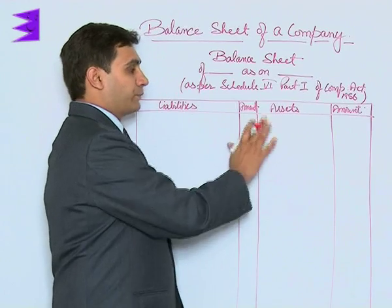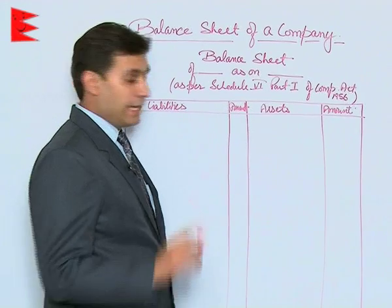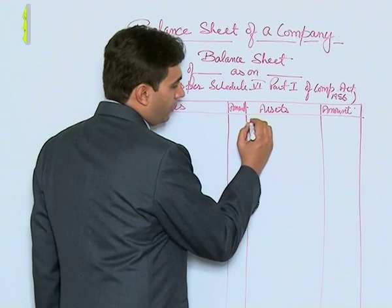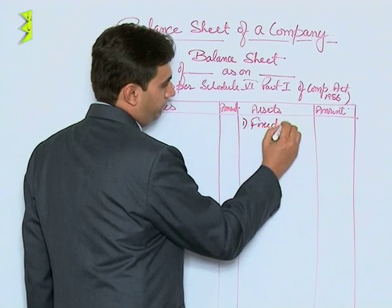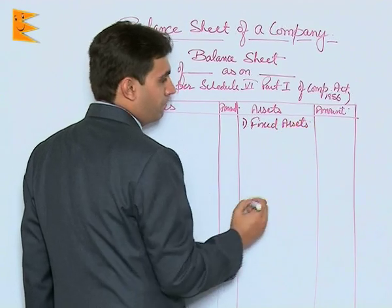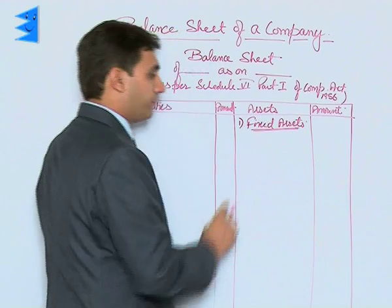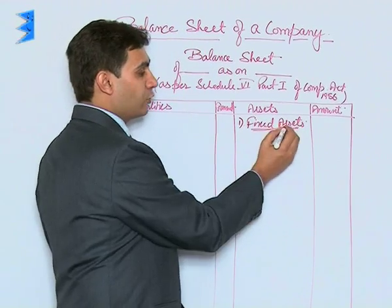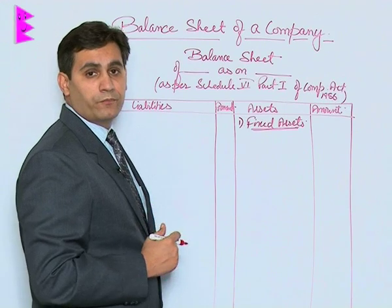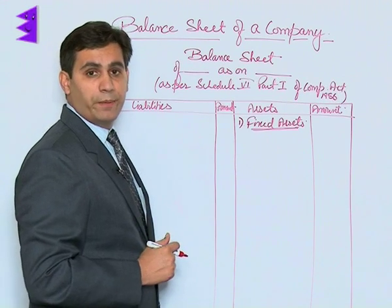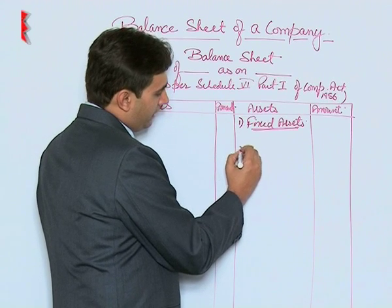The asset side is further divided into five major headings. The first heading is fixed assets. Fixed assets are those assets which have a worth or working life of more than one year and contribute to the earning capacity of the business. The second major heading is investments.